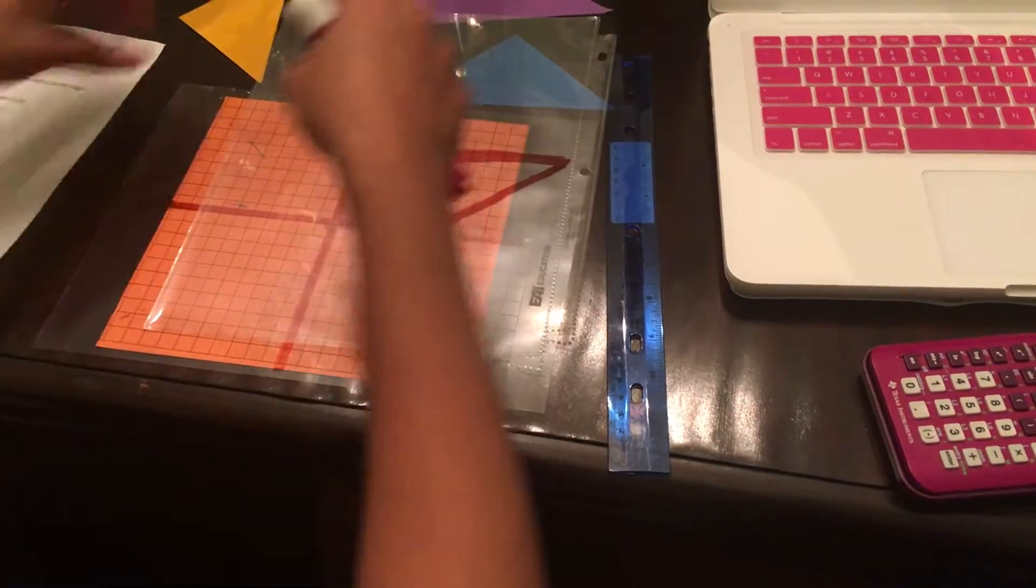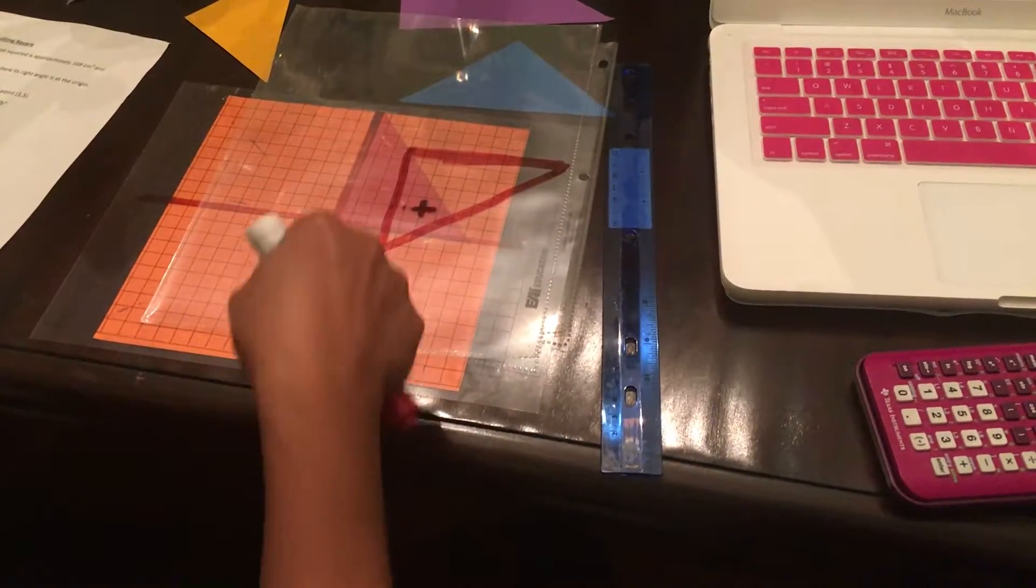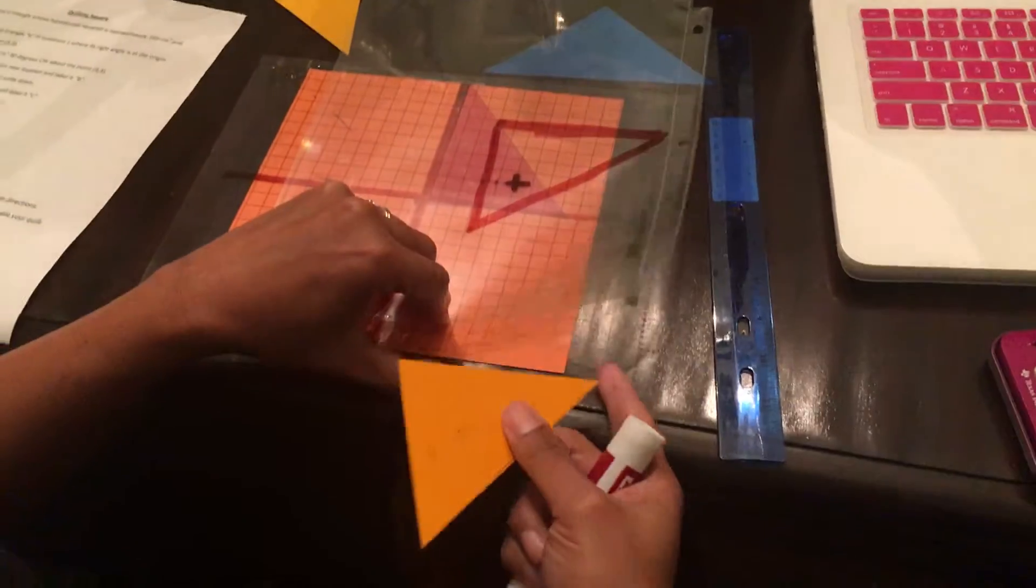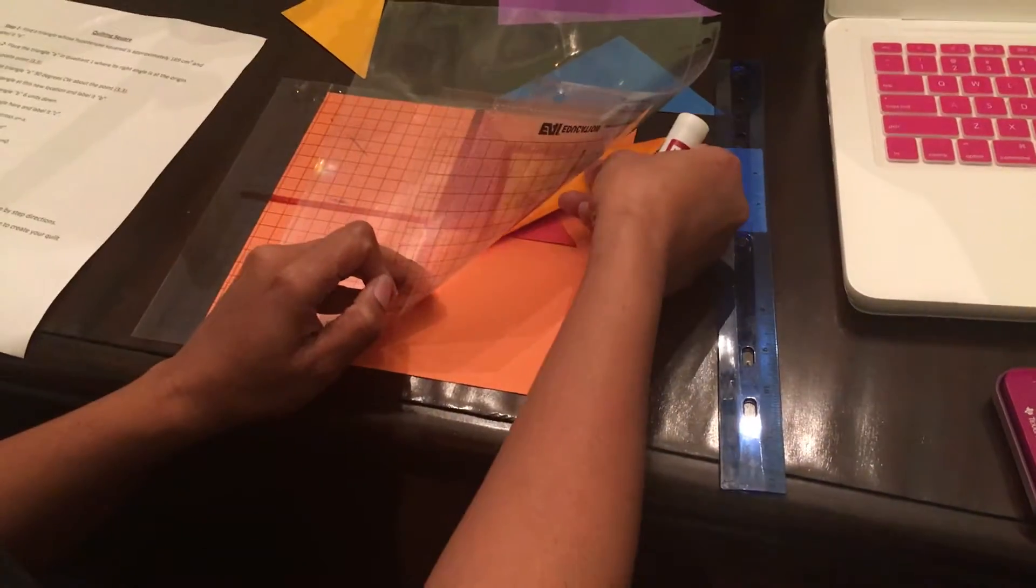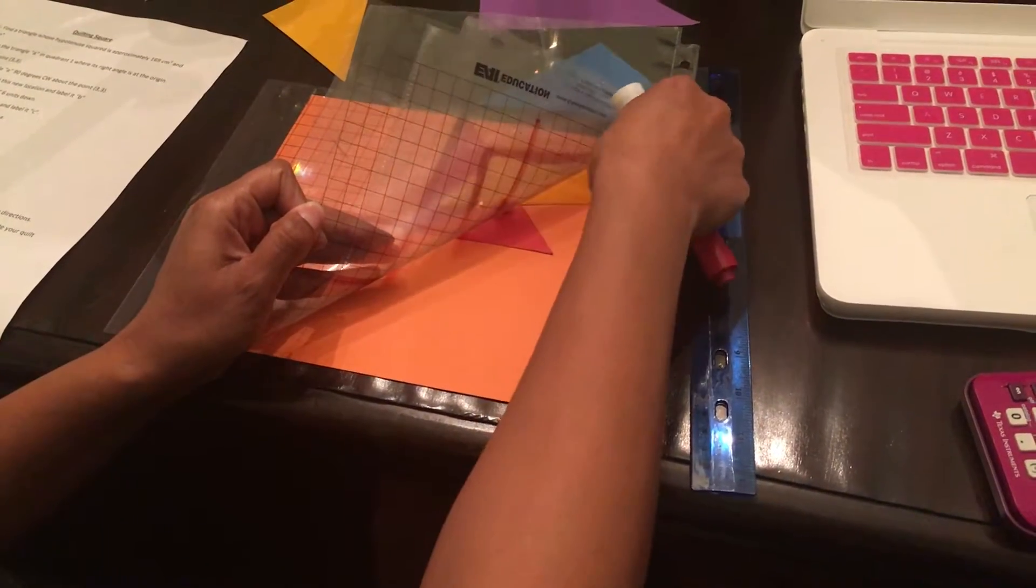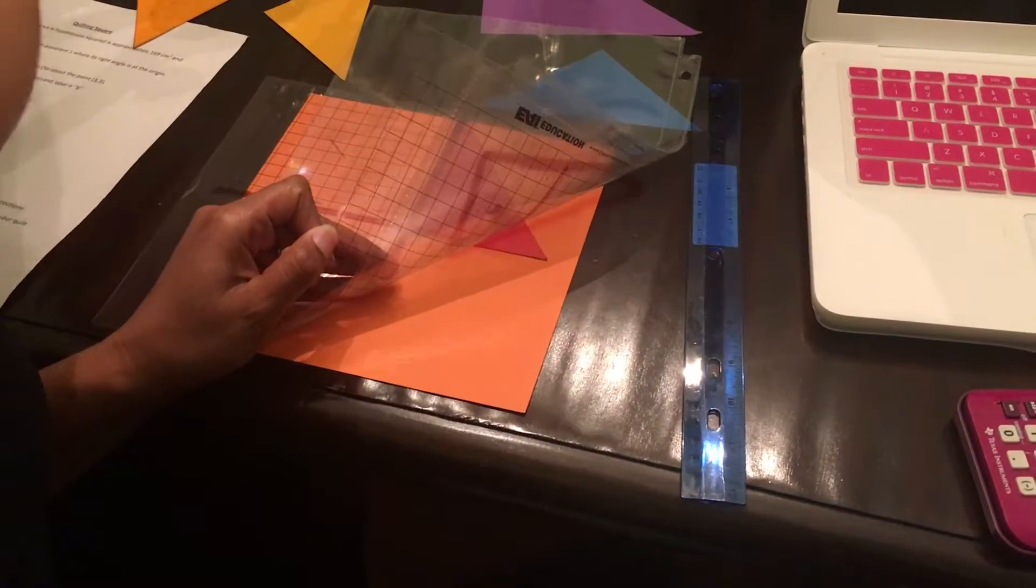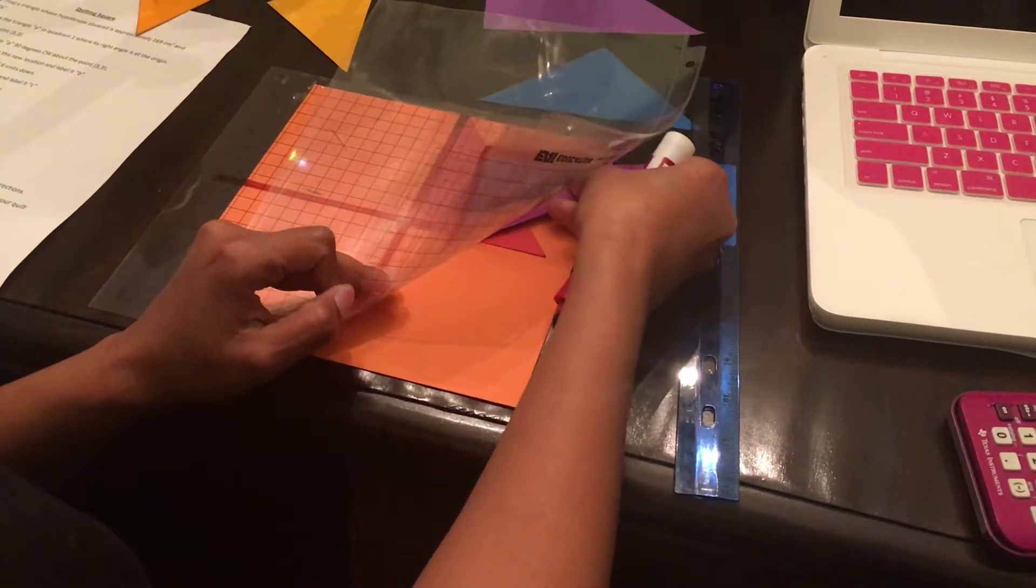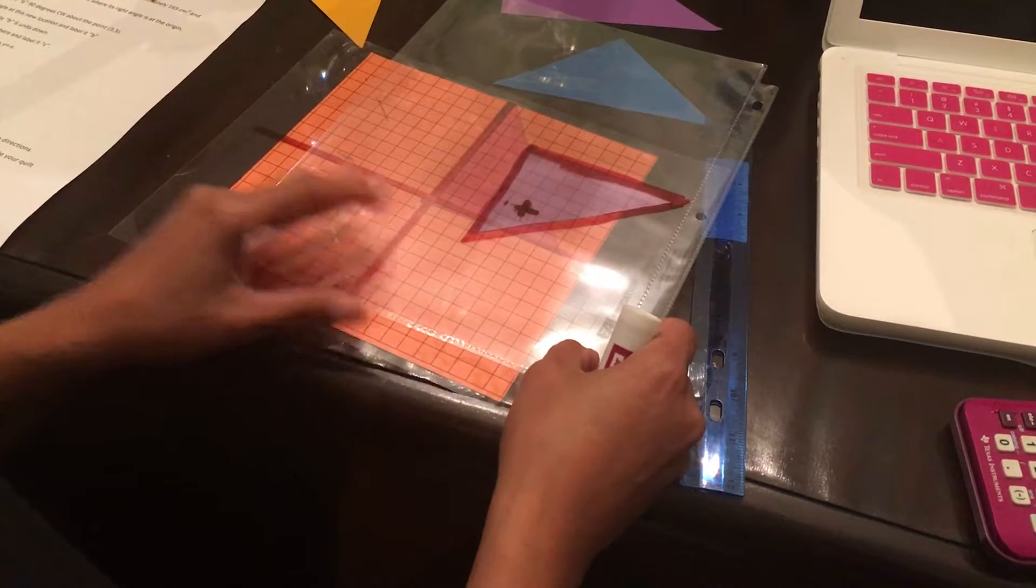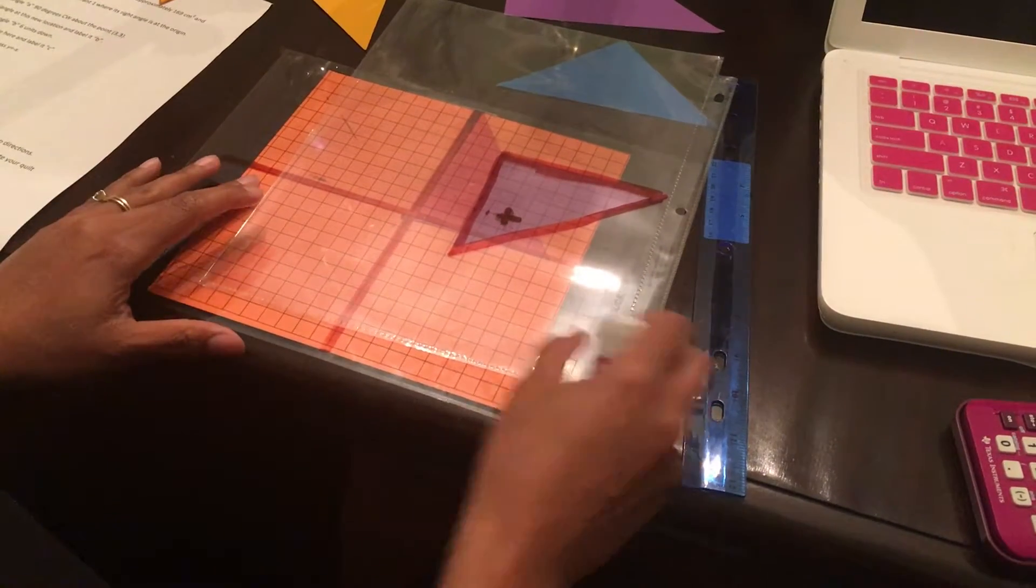Okay, so that's where my new triangle would be and I would take that triangle that was the same size as this one, if that's the one that I'm rotating. And I'm going to put it underneath here, so with my quilt square, let's do a different color so you can see it better. You would be able to see how that shape rotated 90 degrees clockwise about that point.